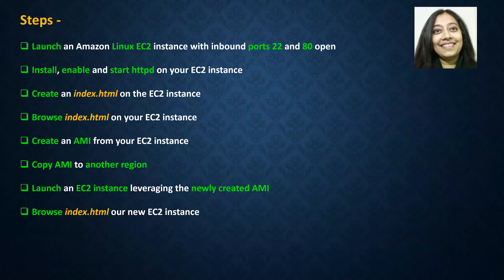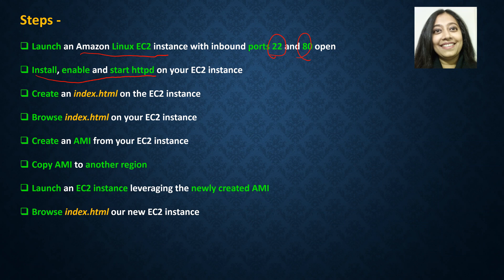Here are the steps for our tutorial today. First we will launch an Amazon Linux EC2 instance with inbound ports 22 and 80 open. After that we will install, enable, and start the HTTPD service on our EC2 instance.